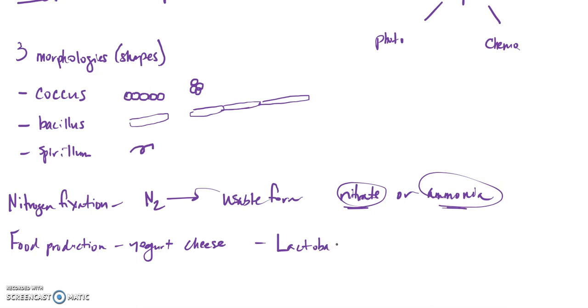Lactobacillus bulgaricus. So we're going to underline that because that's the scientific name. That's a specific species of bacteria that helps in the fermentation process to produce yogurt and some cheeses.